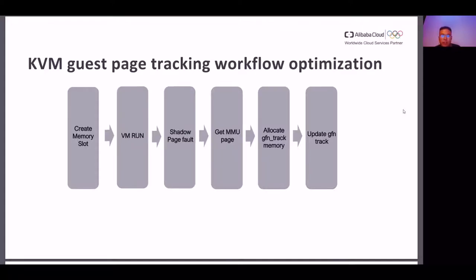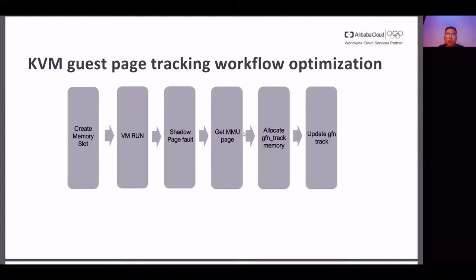The GFN tracker is actually used in get_MMAU_page. So for EPT VM, this part of memory will not be allocated.